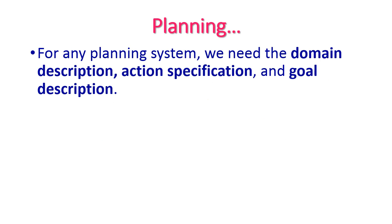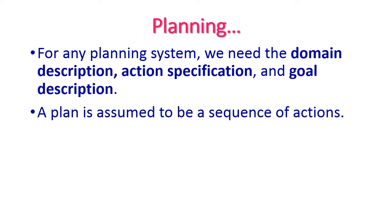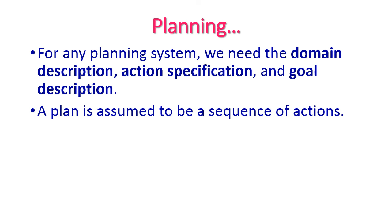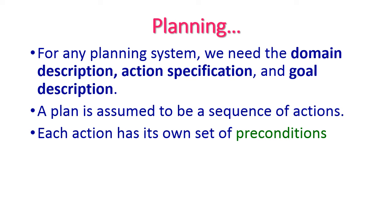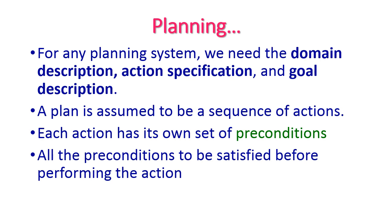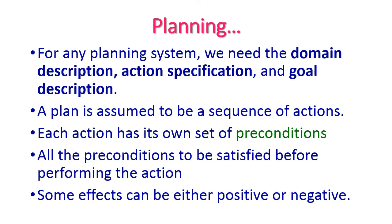For any planning system we should consider three things importantly. The first one is domain description, the second one is action specification, and the last one is goal description. A plan is assumed to be a sequence of actions. Each action has its own set of preconditions — all preconditions must be satisfied before performing the action. Some effects can be either positive or negative.